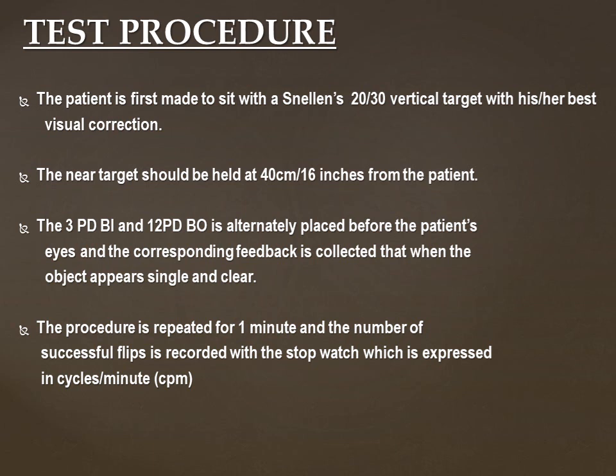This cycle gets repeated for one minute and the number of successful flips is recorded in cycles per minute. Other than recording the number of cycles, we also have to note with which particular prism the patient is taking longer to fuse the object and make it single and clear. Additionally, vergence facility testing helps assess the presence of any suppression or amblyopia in the patient, because if there is suppression, there will either be a lateral movement of the eye or no movement of the eye at all.